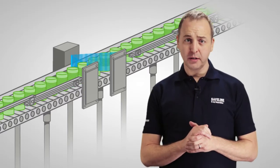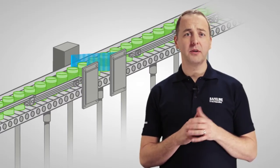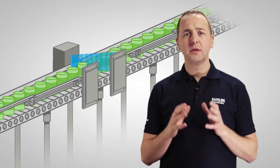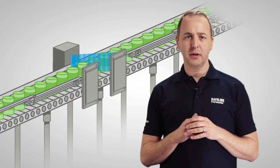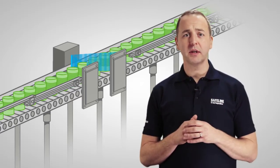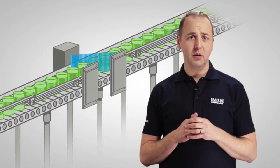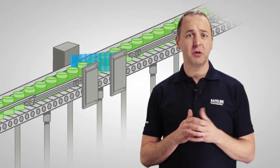Two beams from one generator are angled away from each other and strike two detectors, so every can is imaged from two angles, increasing coverage inside the can and of its base, which increases the probability of contaminant detection.